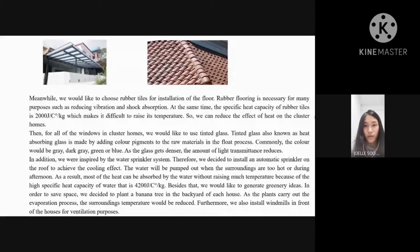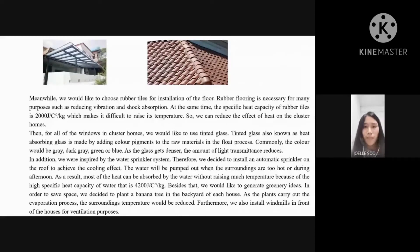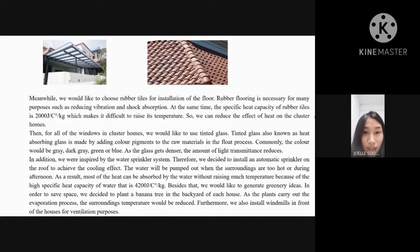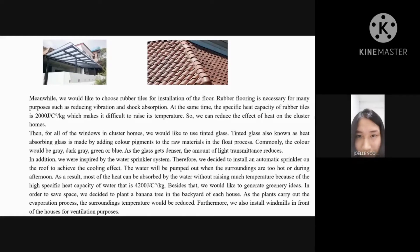For all of the windows in cluster homes, we would like to use tinted glass, also known as heat-absorbing glass. It is made by adding color pigments to raw materials in the float process. The colors would commonly be gray, dark gray, green, or blue. As the glass gets denser, the amount of light transmittance reduces.